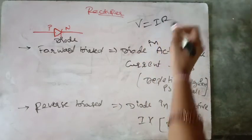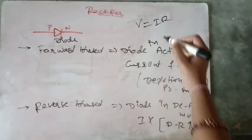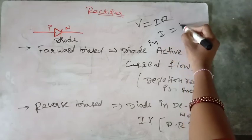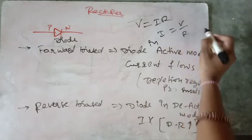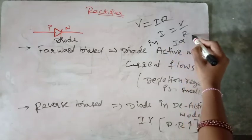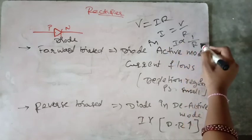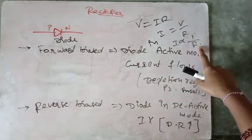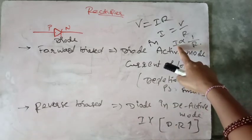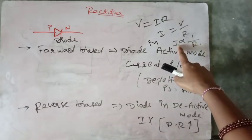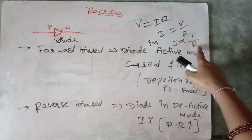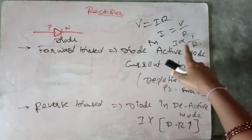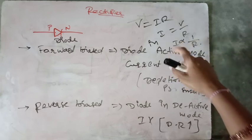From Ohm's law, V is equal to IR, which means I is equal to V by R. That means I is inversely proportional to resistance. If the resistance increases, current flow decreases. If the resistance decreases, current flow increases.